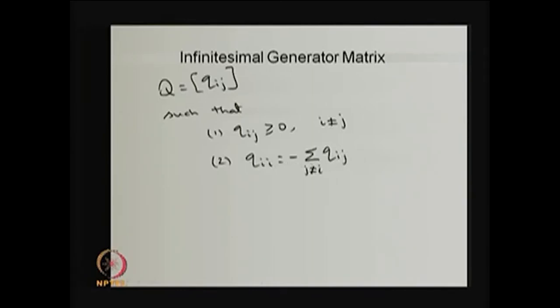This matrix is called the infinitesimal generator matrix. Some books also call it the rate matrix. The off-diagonal entries are rates, all non-negative. If a rate is 0, there is no possible transition between those states in a small interval of time. Whenever a rate Qij is greater than 0, there is a positive probability that the system can transition from state i to state j.